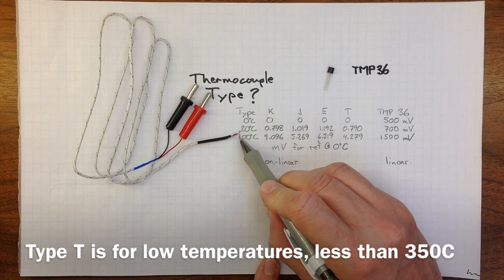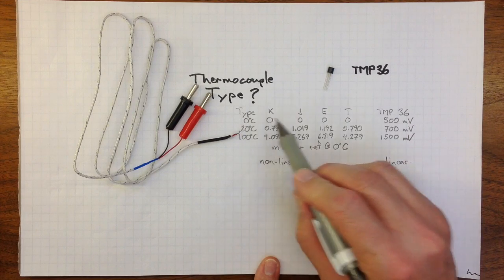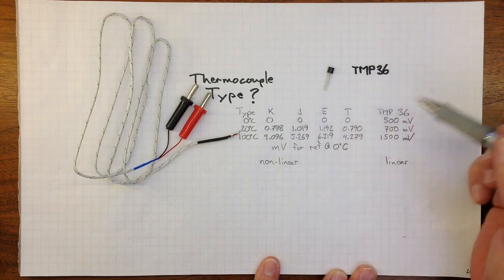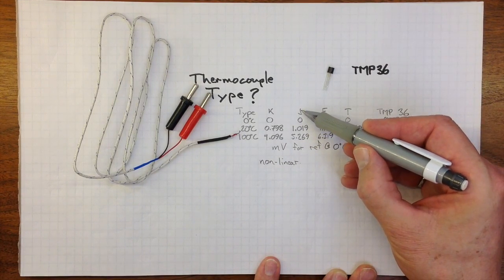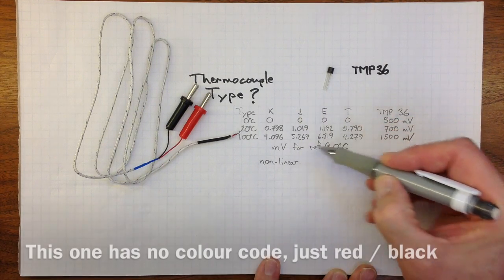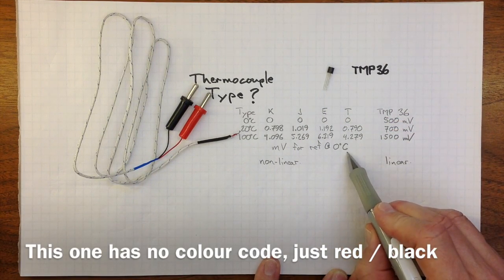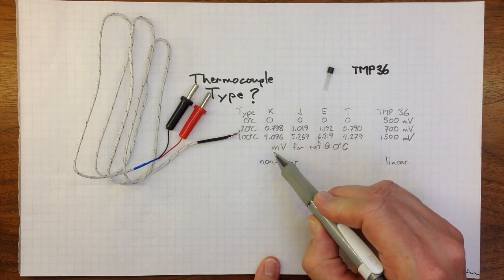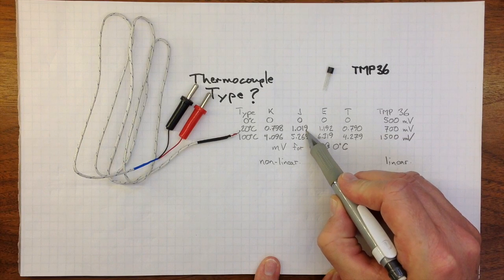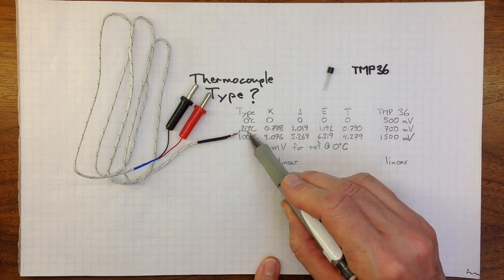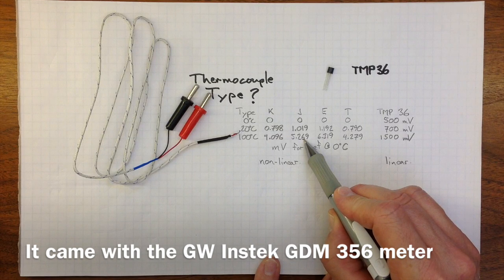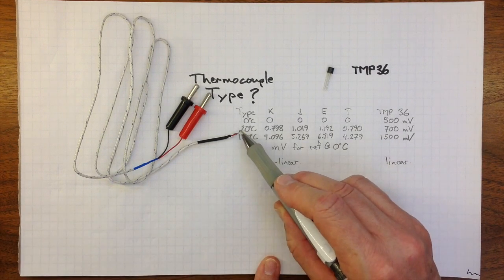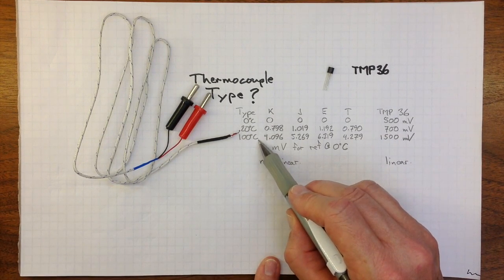Different metals give different potentials from the thermocouple. So if, for example, this was a type J thermocouple, we'd expect to see with the reference junction at zero degrees Celsius, no voltage if the bead was at zero degrees Celsius, or about a millivolt if the bead was at 20 degrees Celsius, or a little over five millivolts if the bead was at a hundred degrees Celsius.